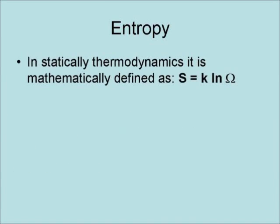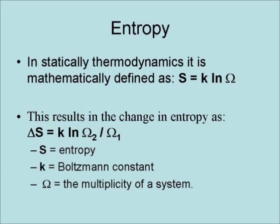In statistical thermodynamics, it is mathematically defined as S equals k natural logarithm of omega. This results in the change in entropy as ΔS equals k natural logarithm of omega 2 over omega 1.